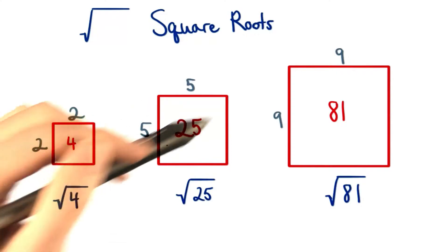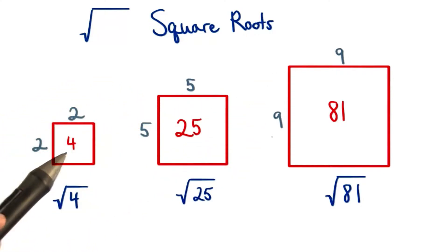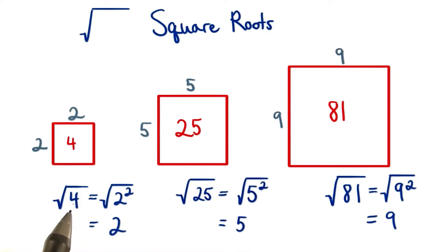To find the side length of each of these squares, we actually took the square root of each of the areas. We can rewrite 4 as 2 squared. So we have the square root of 2 squared. This square root undoes the square power, leaving us with just 2.